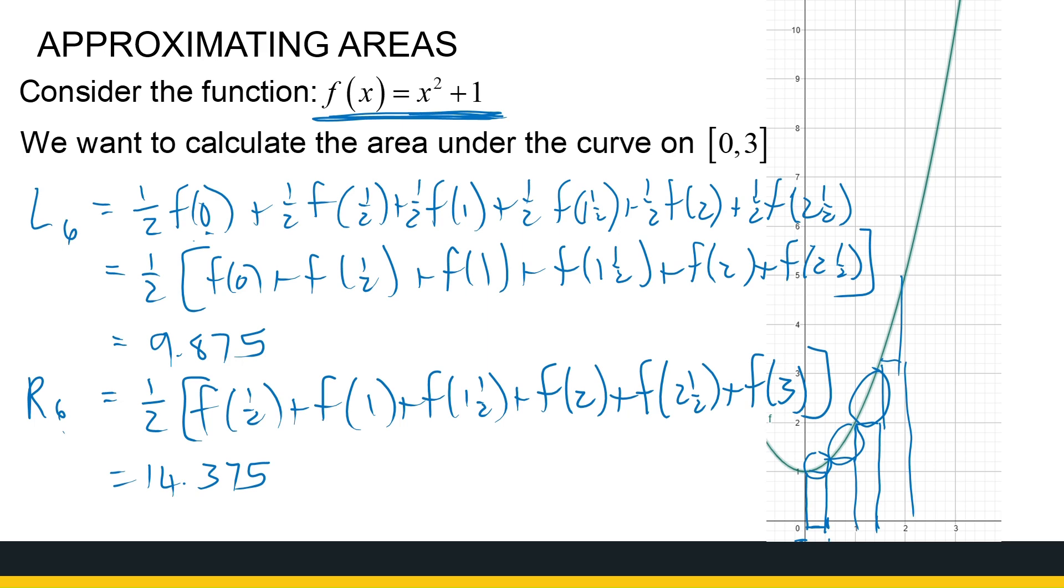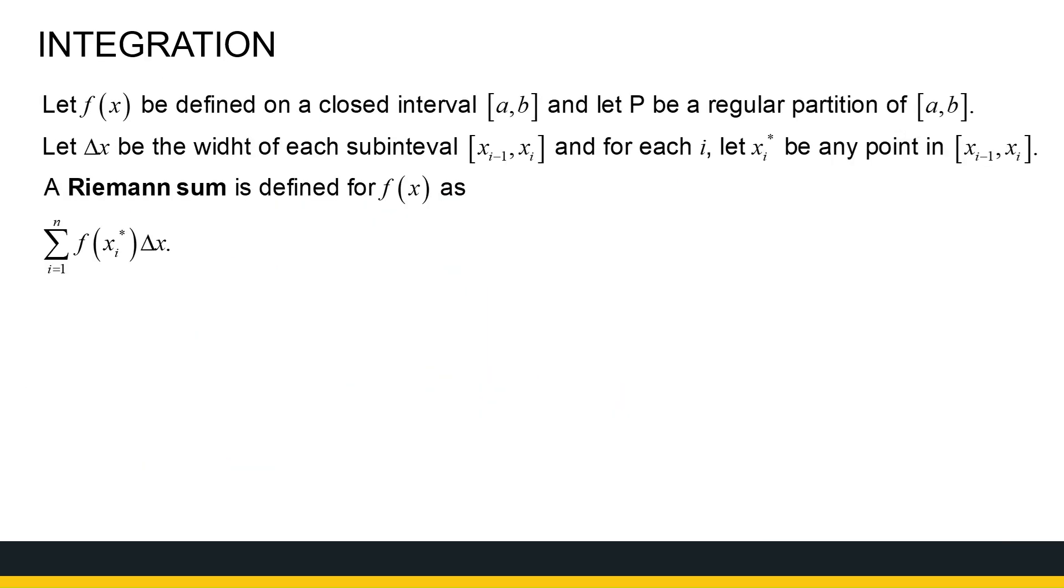So then you ask yourself, how can I get the most accurate approximation of the area under the curve? Well, the more rectangles I get, the more accurate my approximation gets. And that gets us to the concept of a Riemann sum. Now a Riemann sum says take a function that's defined on a closed interval from A to B. Let P be a regular partition. So I'm chopping this function up into partitions that are the same width, Δx.